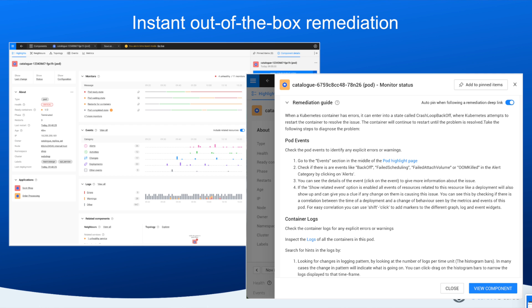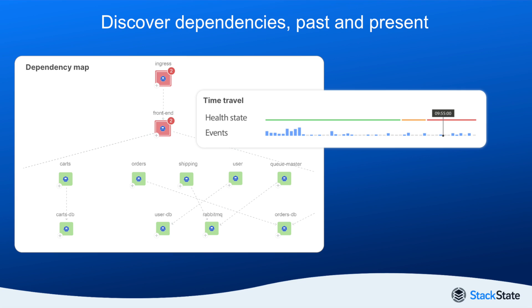That means out-of-the-box, instant remediation. But what makes our APM solution really stand out is our unique ability to rewind back in time. Not only does it immediately reveal current network dependencies, it also exposes historical trends just as easily and quickly. And that is exactly what helps your teams identify the bottleneck in your landscape and pinpoint faulty connections that might have previously gone unnoticed.